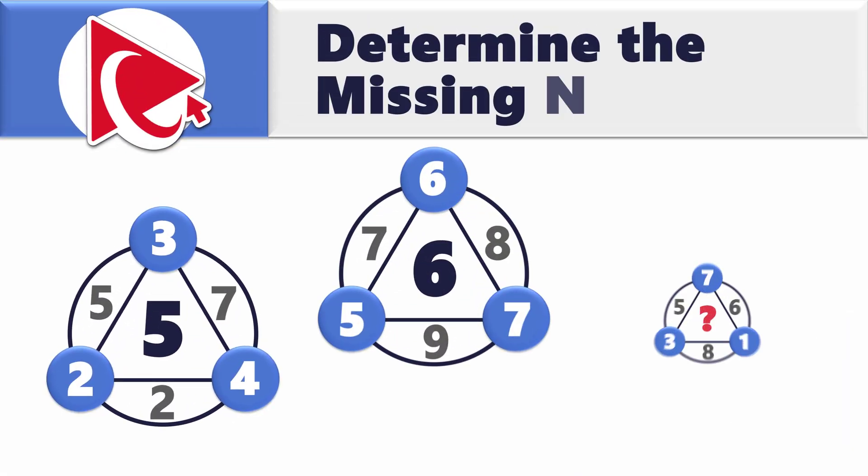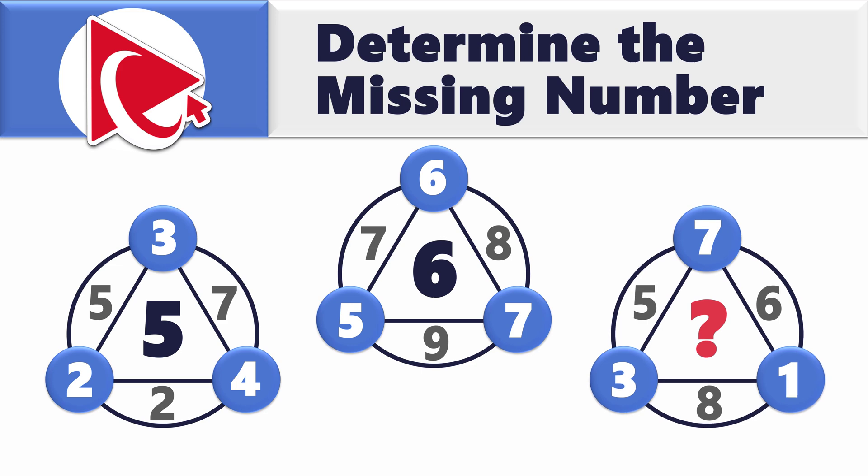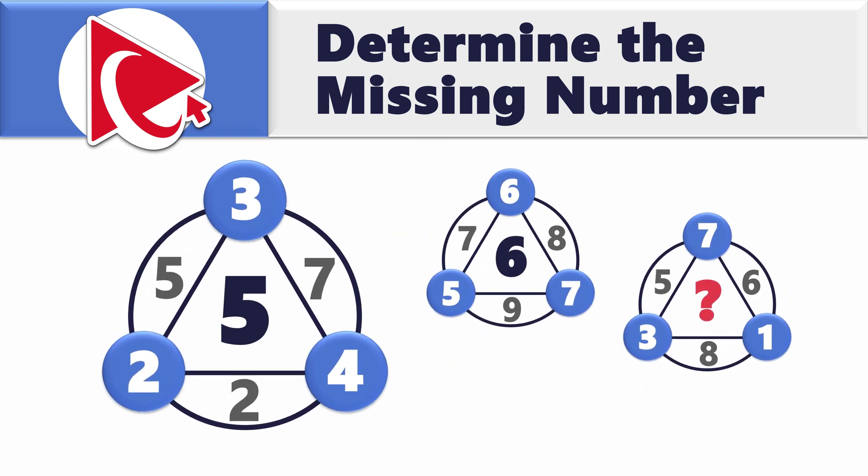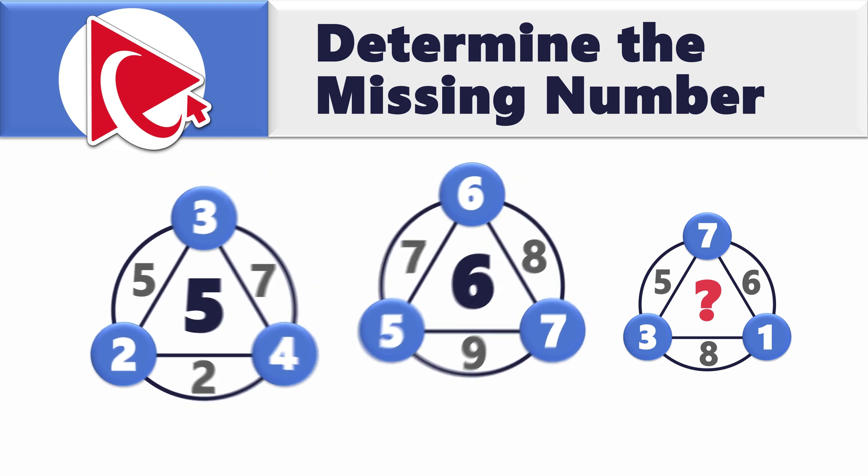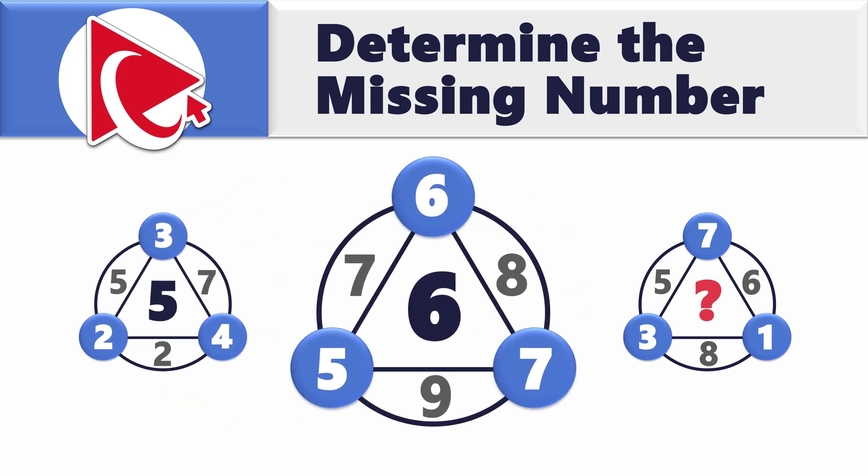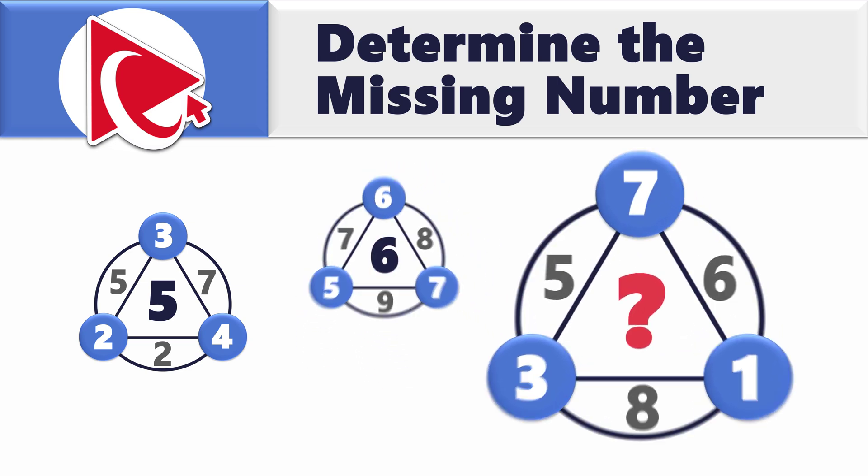You're presented with unusual looking shapes, the combination of circles and triangles. Each shape has seven numbers. In the first shape, the inside numbers are 5, 2, and 7, the outside numbers are 2, 3, and 4, and the middle number is 5. In the second shape, the inside numbers are 7, 9, and 8, the outside numbers are 5, 6, and 7, and the middle number is 6.